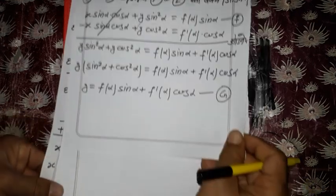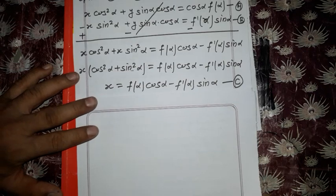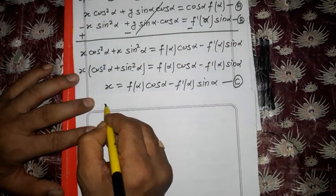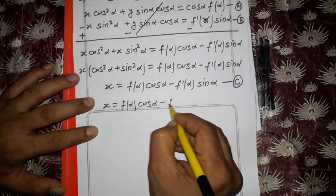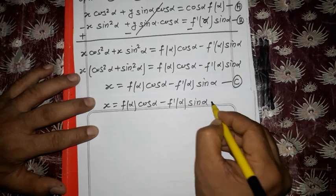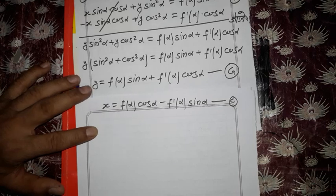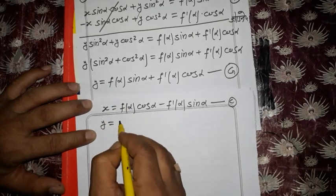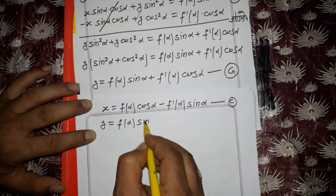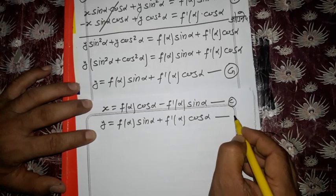So the values obtained are: x = f(α) cos α - f'(α) sin α, and y = f(α) sin α + f'(α) cos α (equation g). Now the question asks us to prove the radius of curvature. Let's proceed further.